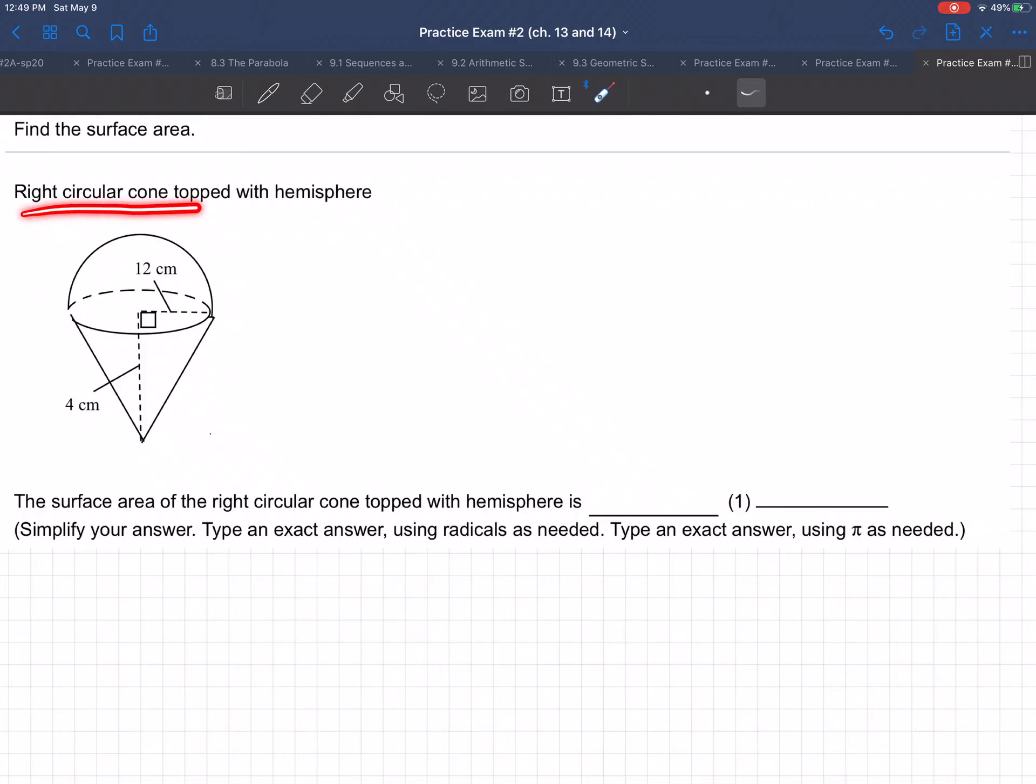Find the surface area, right circular cone topped with a hemisphere. So we have on this one, first off, a half a sphere.